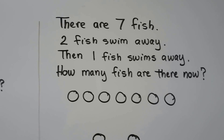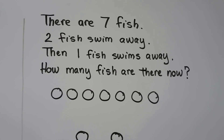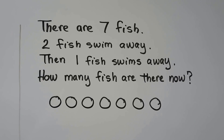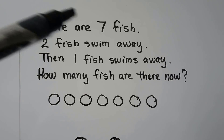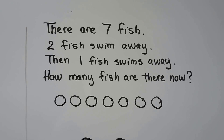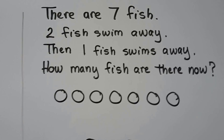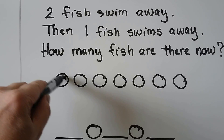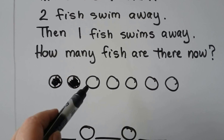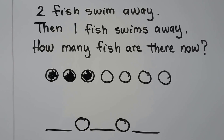There are seven fish. Two fish swim away, then one fish swims away. How many fish are there now? We can make seven circles for the seven fish: one, two, three, four, five, six, seven. We can fill in the dots for the ones that swim away. Two fish swim away — that's one, two. Then one fish swims away, so we fill in one more. How many fish are there now?